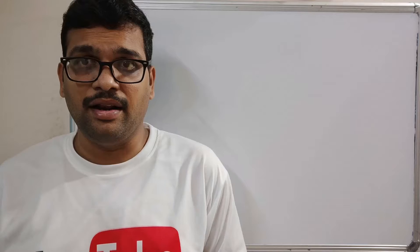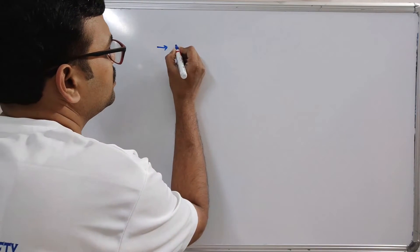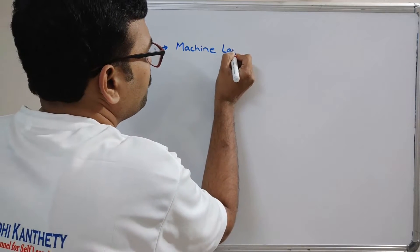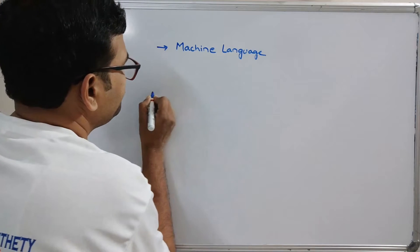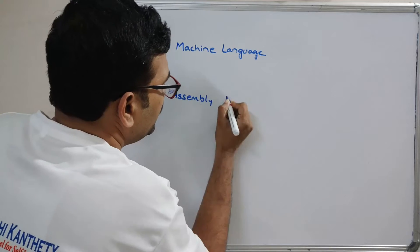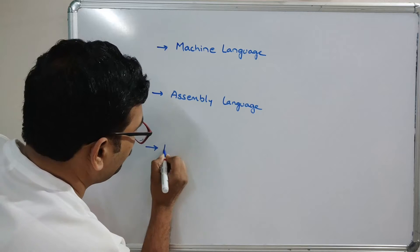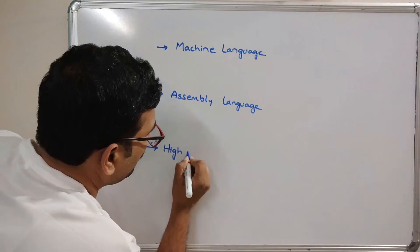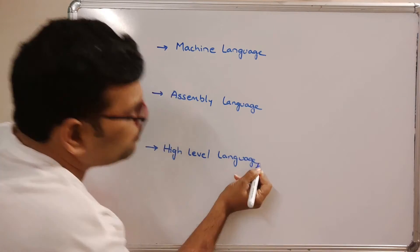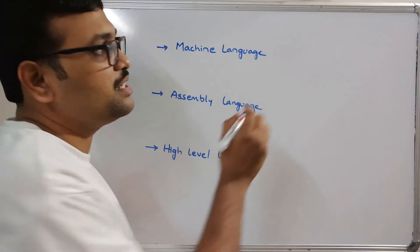How many languages are there? There are mainly three languages: one is machine language, assembly language, and high level language. In these different languages we can communicate with the system. The system can only understand the binary language.